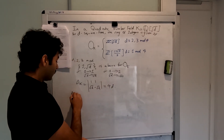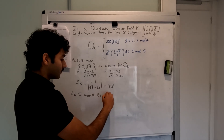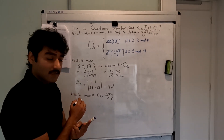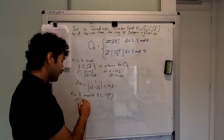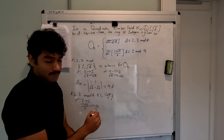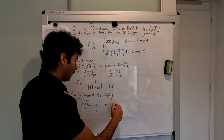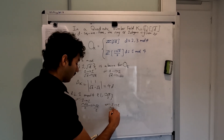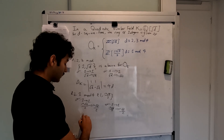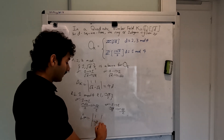Now, when d is congruent to 1 mod 4, we see that {1, ½(1 + √d)} is the basis for O_k, and then the two embeddings from k are the identity and the map sending ½(1 + √d) to its Galois conjugate, ½(1 − √d). Thus, we see that the discriminant is the square of the determinant of the matrix [[1, 1], [½(1 + √d), ½(1 − √d)]].